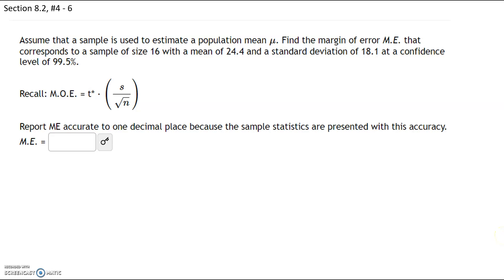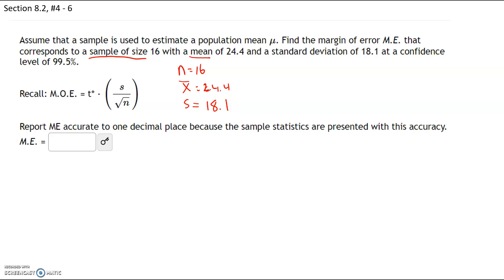This question says: assume that a sample is used to estimate a population mean. Find the margin of error that corresponds to a sample size of 16. So I'm going to write all this down. Sample size n = 16, with a sample mean x-bar of 24.4, and a sample standard deviation s = 18.1. We need to find a margin of error at a confidence level of 99.5%.